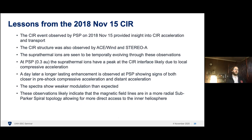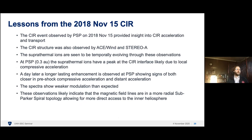Summarizing the lessons from this first Parker Solar Probe event: the CIR was observed on November 15, 2018, and provided a lot of insight into CIR acceleration and transport. The CIR structure was observed by ACE and Wind as well as STEREO-A. Suprathermal ions are seen to be temporally evolving throughout the observations as we go from L1 to Parker Solar Probe to STEREO-A. Parker Solar Probe shows two peaks in suprathermal ions — one possibly from local or closer-in acceleration, the other from more remote acceleration. The spectra show far weaker modulation than expected, indicating sub-Parker spiral magnetic topology allowing more direct access into the inner heliosphere.